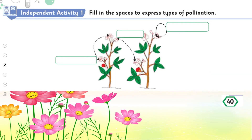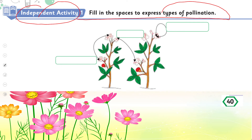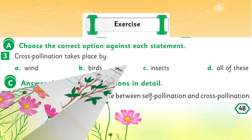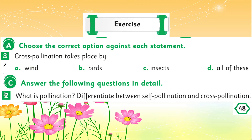This is also your homework from page number 40, independent activity: fill in the spaces to identify the types of pollination — which ones are self-pollination and which are cross-pollination. Additionally, on page number 42, do question exercise A, MCQ number 3, and from exercise C, question number 2 in your notebooks.